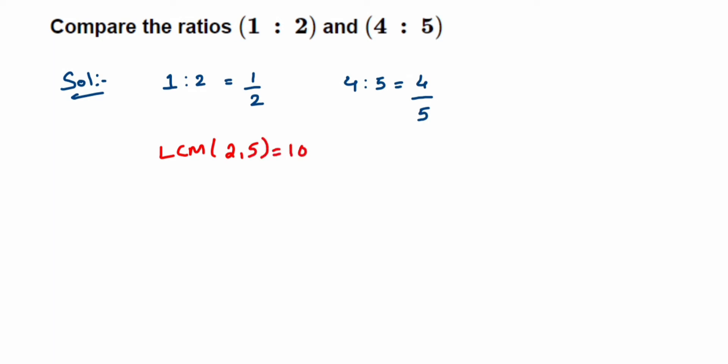Now I will change the denominator of both numbers. That is, I want to find the equivalent fraction of 1 by 2 and 4 by 5 with denominator 10. So 1 upon 2, we can find the equivalent fraction. With 2, what should I multiply to get 10 in the denominator? It's 5. So multiply 5 in the numerator and denominator, so it is 5 upon 10.